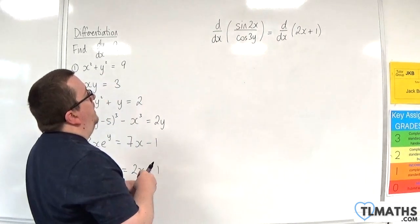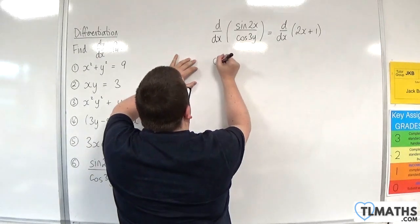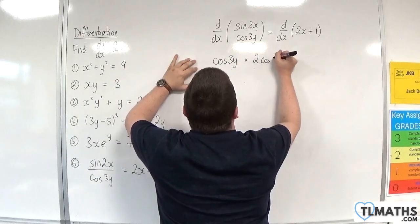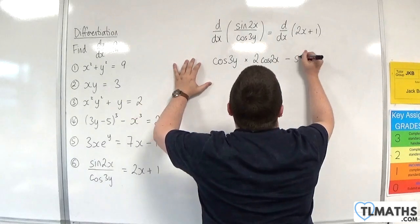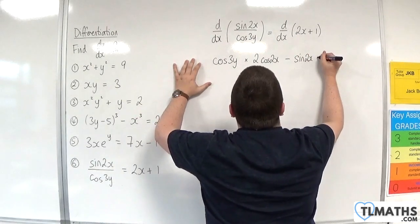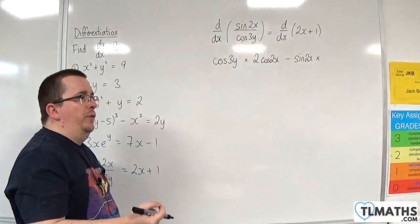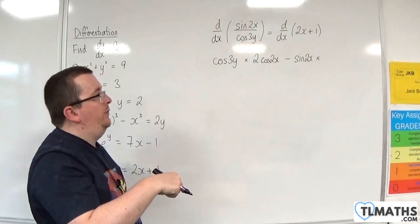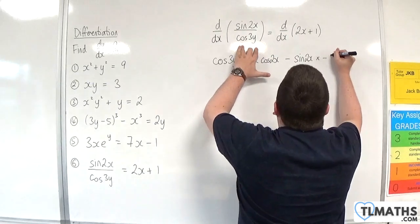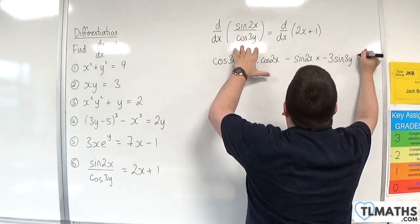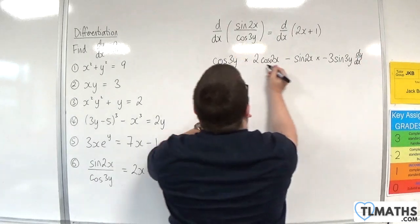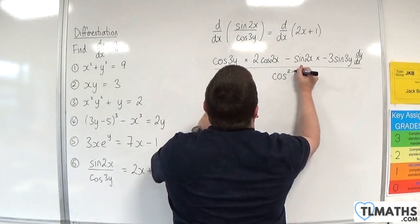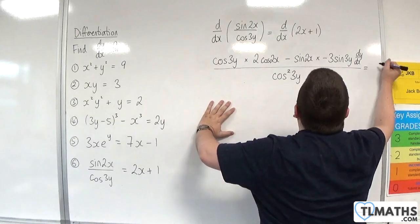Using the quotient rule: the bottom cosine 3y times the derivative of the top, which is 2 cosine 2x, minus the top times the derivative of the bottom. The derivative of cosine 3y is minus 3 sine 3y dy by dx. All over the bottom squared, cosine squared 3y. The right-hand side differentiates to 2.